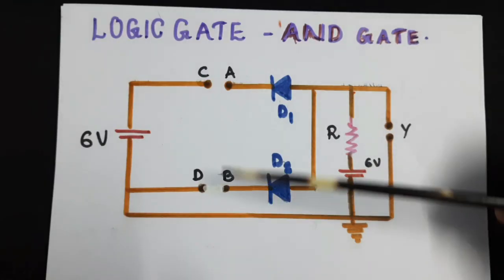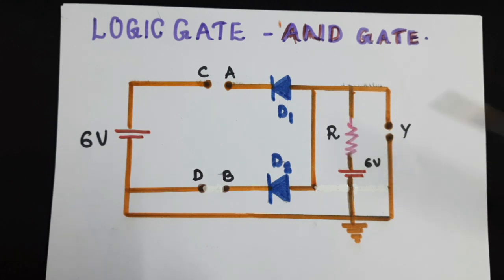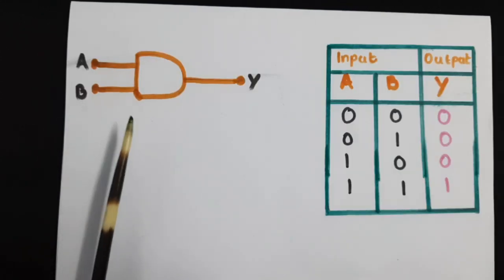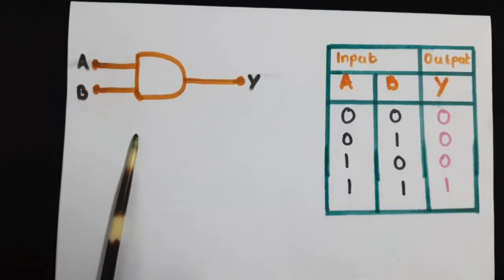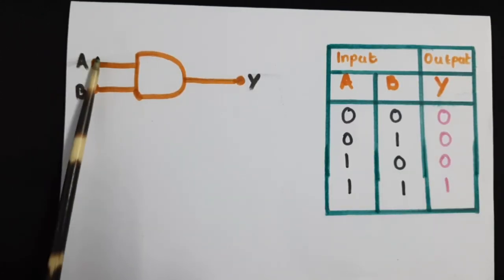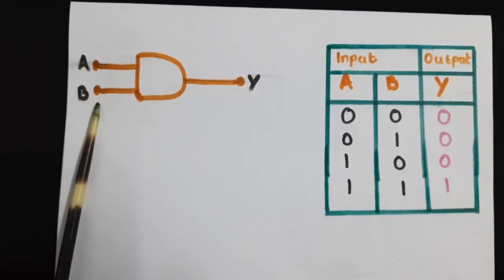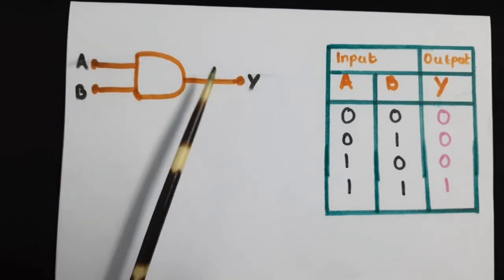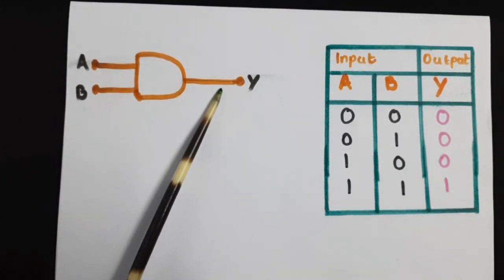This is the circuit diagram for AND gate. This is the symbol — A and B are the two inputs and Y is the output.